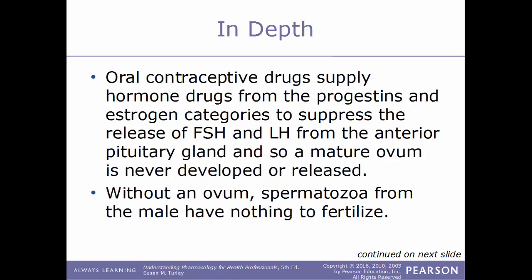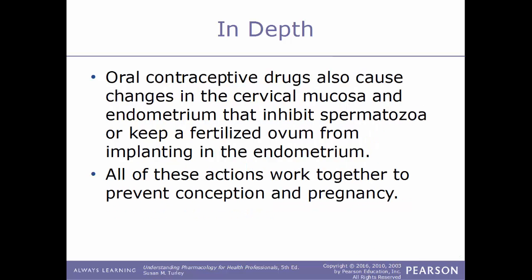Oral contraceptive drugs supply hormones from the progestin and estrogen categories to suppress the release of FSH and LH from the anterior pituitary gland, so a mature ovum is never developed or released. Without an ovum, spermatozoa will have nothing to fertilize, and pregnancy is prevented. Oral contraceptives can also cause changes in the cervical mucosa and endometrium that inhibit spermatozoa or keep a fertilized ovum from implanting within the endometrium.